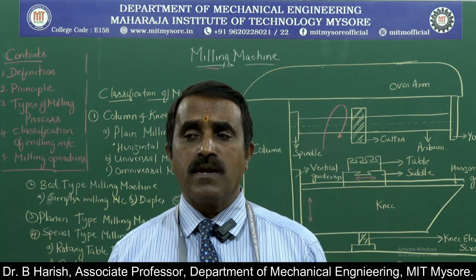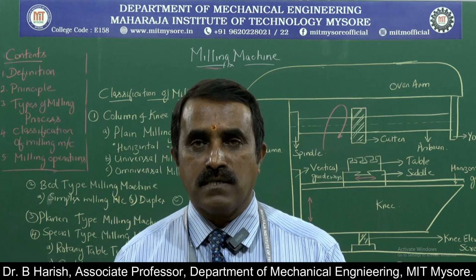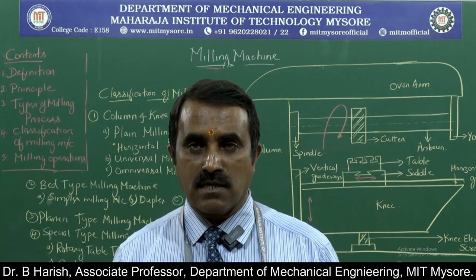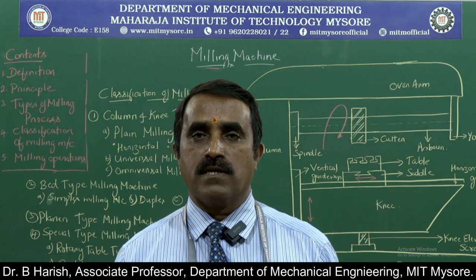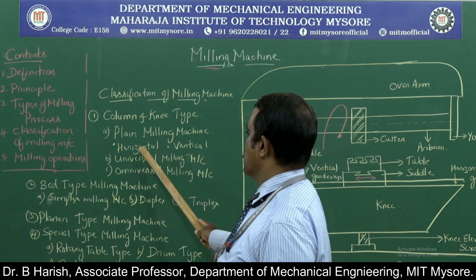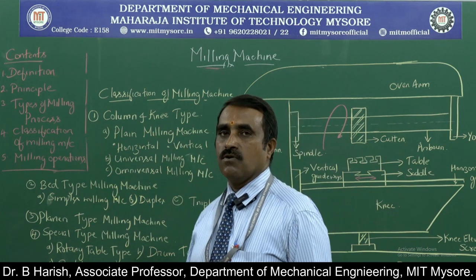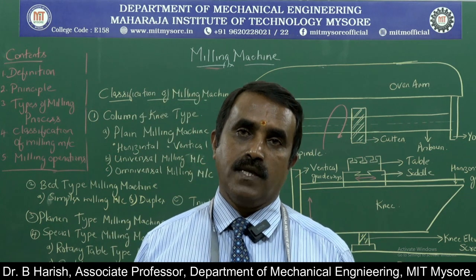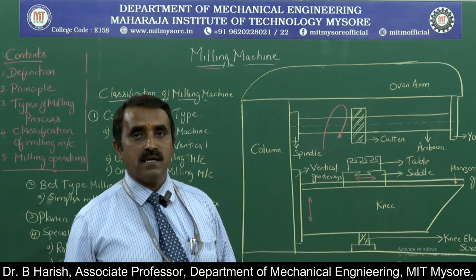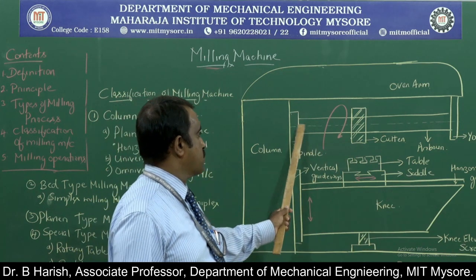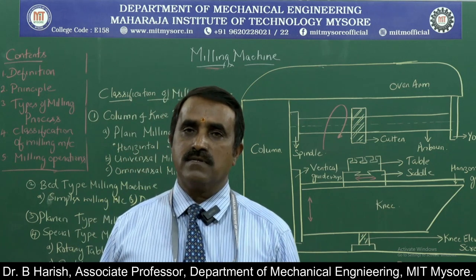Next we will discuss two types of milling machines in detail: horizontal milling machine and vertical milling machine — covering parts, construction, and working. These come under column and knee type, plain milling machine. The horizontal milling machine is called so because the spindle axis is in the horizontal direction.